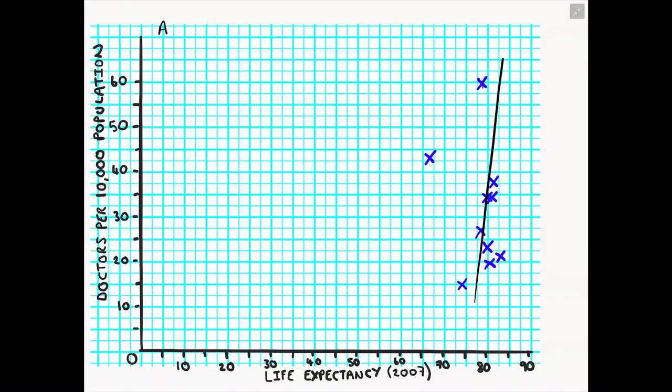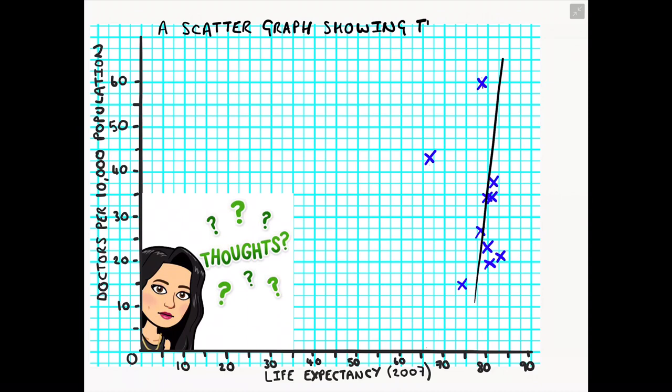Now every scatter graph and any type of graph you ever create always needs to have a nice clear title as well added to it. Now once you have your title, what you might start to do is then interpret your scatter graph. And what I mean by that is suggest reasons why you think that pattern has emerged. So on my screen, I am seeing a positive correlation between life expectancy and the number of doctors.